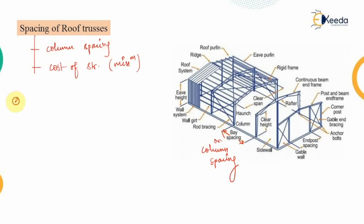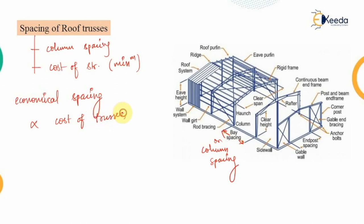The actual economical spacing depends on certain factors: the cost of the truss — if the truss is costly, the spacing should be increased; the cost of purlins — if purlins are provided in larger quantities, the spacing must be adjusted; and the cost of roof coverings and columns. These factors together determine the economical spacing of the roof truss.